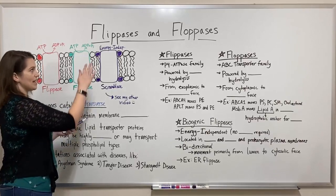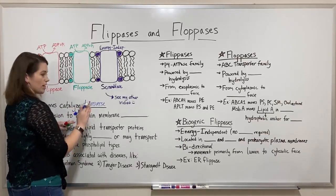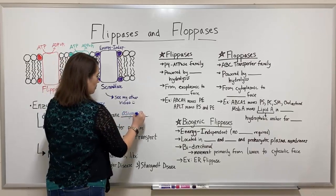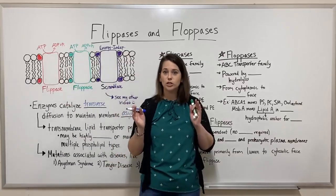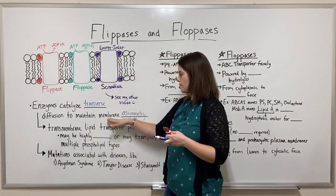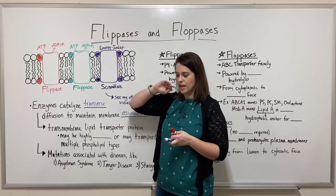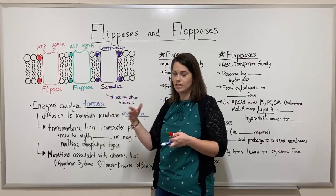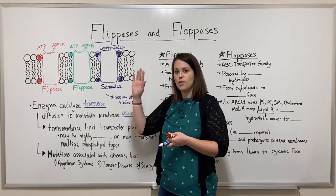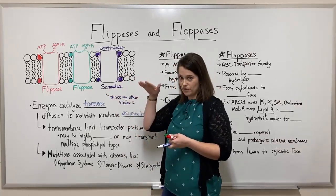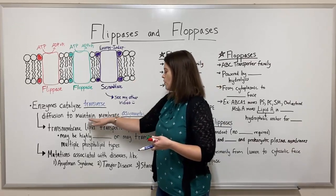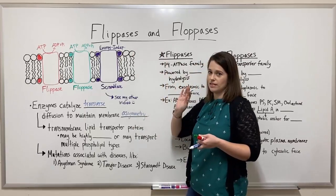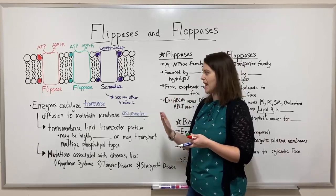Sometimes it's called flip-flop movement, hence their names: flipases and flopases. Why do they do this? To maintain membrane asymmetry. The side of the membrane that faces the outside of the cell has different groups, different concentrations or frequencies of phospholipids than the cytoplasmic face. That membrane asymmetry is important to membrane function, and these are the types of enzymes that help build and maintain that asymmetry.